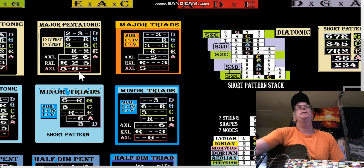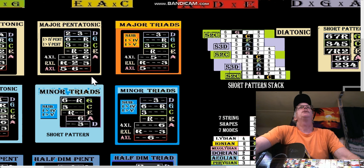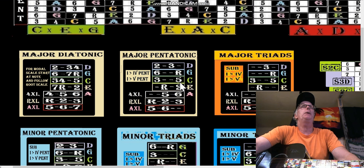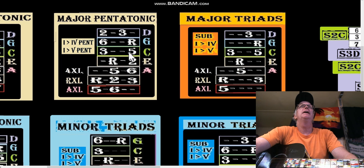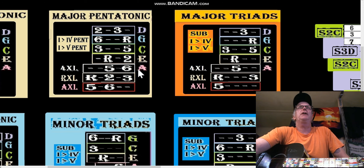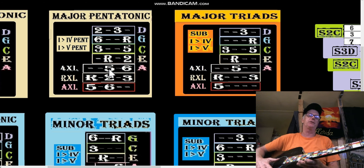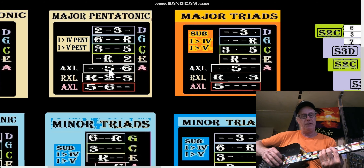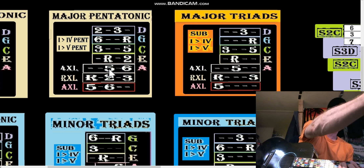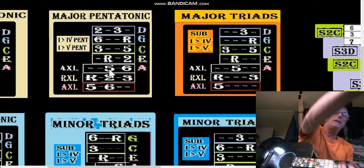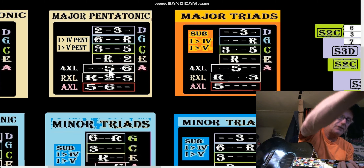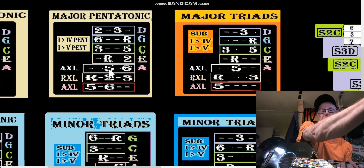Everybody knows the pentatonics, so it doesn't really help us right away just to study the string shapes — although it might help us with substitutions. So let's say we're in the key of F. Here's an E-shape F. The fourth of E is A, and the CAGED fifth of E is C.